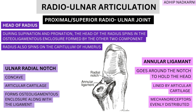This osteoligamentous enclosure — the annular ligament plus the bony part — surrounds the radius. The annular ligament goes around the notch and holds the radial head in place, and it is lined with articular cartilage. The ligament also has mechanoreceptors that are evenly distributed; these tell the brain the position of the ligament and joint, providing proprioception.